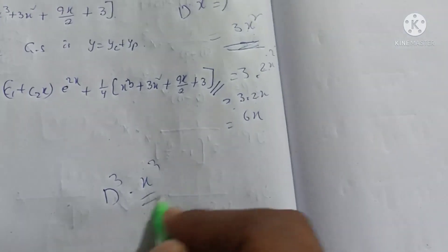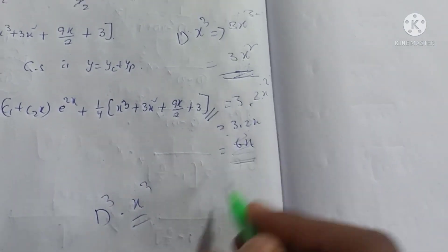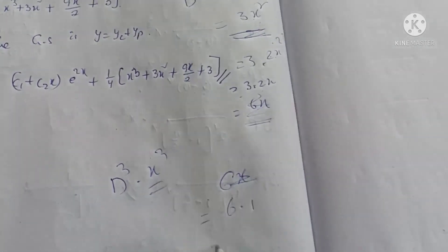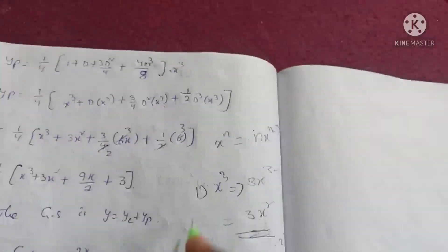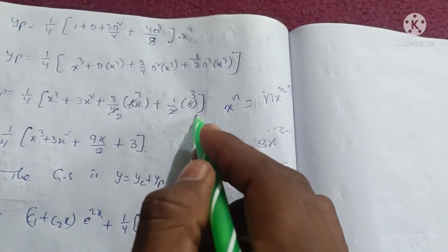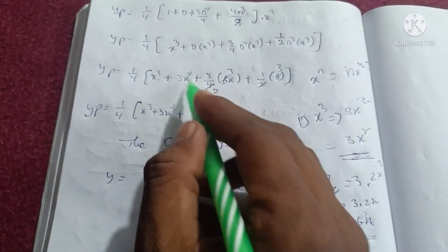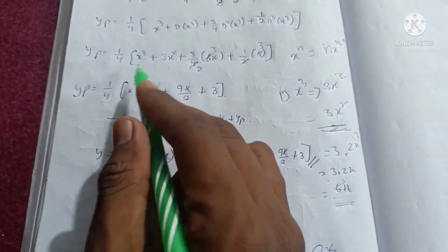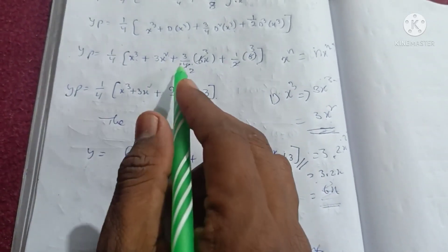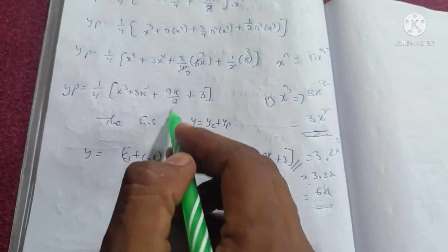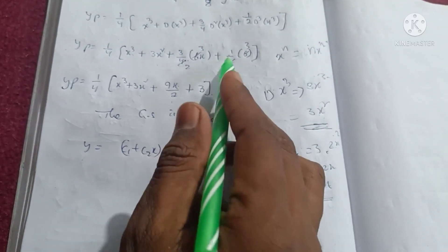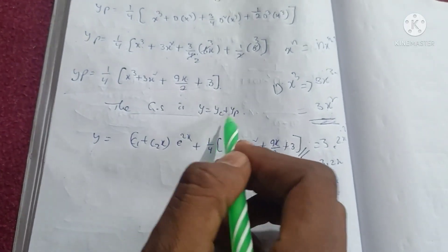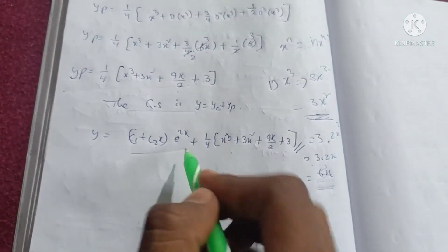Substituting: yp = 1/4 · (x³ + 3x² + (3/4)·6x + (1/2)·6) = 1/4 · (x³ + 3x² + 9x/2 + 3). Therefore yp = 1/4·(x³ + 3x² + 9x/2 + 3). The general solution is y = yc + yp = (c1 + c2·x)·e^(2x) + 1/4·(x³ + 3x² + 9x/2 + 3).